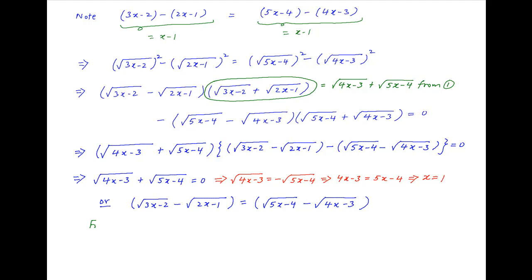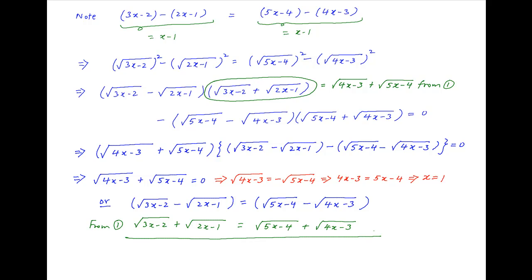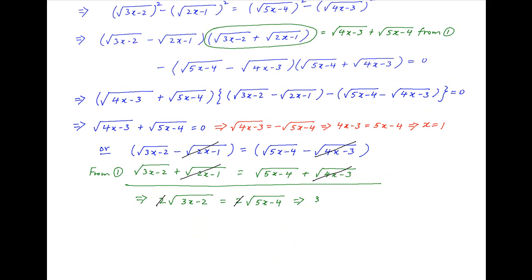From equation 1, √(3x-2) + √(2x-1) = √(5x-4) + √(4x-3). Adding this to the second result, on the left-hand side √(2x-1) cancels and on the right-hand side √(4x-3) cancels. Therefore the second result implies 2·√(3x-2) = 2·√(5x-4). Taking the square of both sides, 3x - 2 = 5x - 4, which gives 2x = 2, or x = 1.